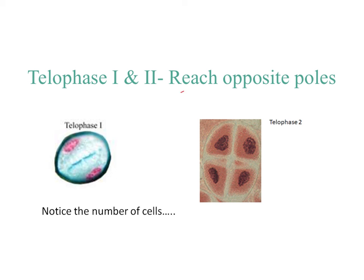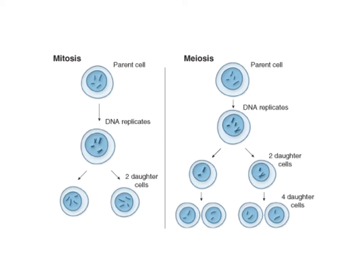When we reach telophase, this is when the chromosomes reach opposite poles. You can tell we're clearly going to make two different cells, and then in telophase 2, we now have four different cells. Comparing mitosis and meiosis, we're still going through roughly the same mechanism — the PMAT: prophase, metaphase, anaphase, telophase. At the end of mitosis, you end with two daughter cells identical to the parent cell. In meiosis, you end with four daughter cells, and they only have half the number of chromosomes — the parent cell started with four, and the daughter cells each only have two.